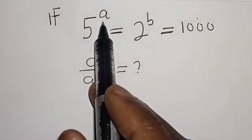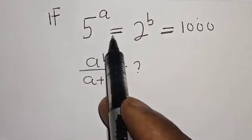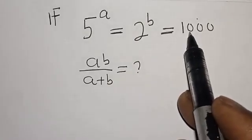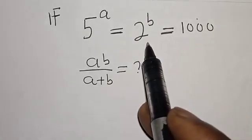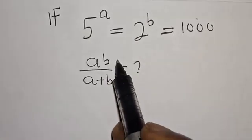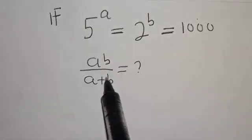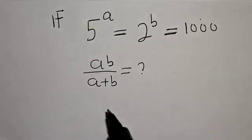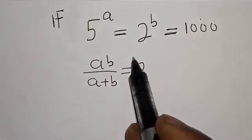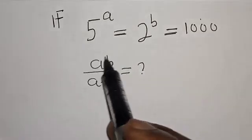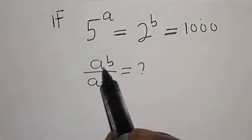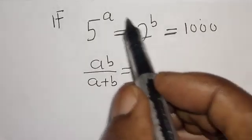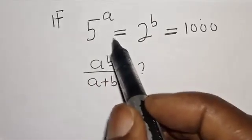If 5 raised to power a is equal to 2 raised to power b is equal to 1000, what is the value of ab divided by a plus b? Hi everyone, welcome to my class. In this class we want to find the value of ab divided by a plus b from this given equation: 5 raised to power a is equal to 2 raised to power b which is equal to 1000.